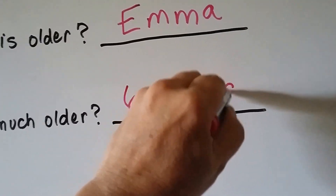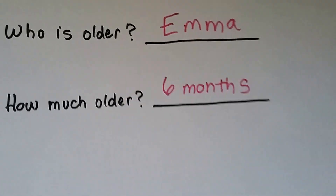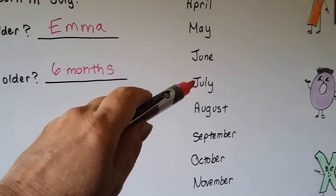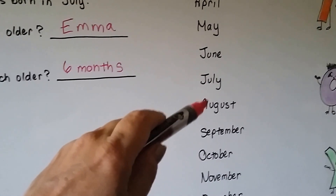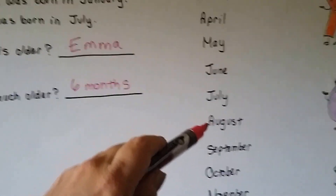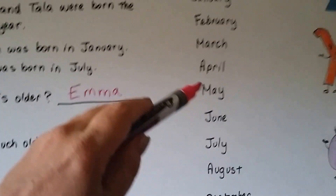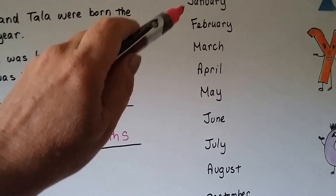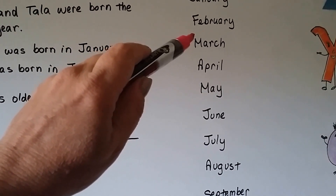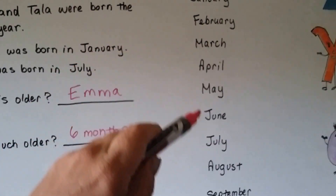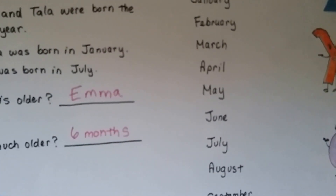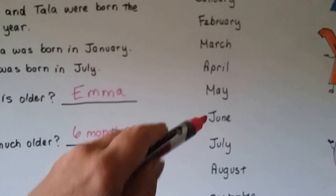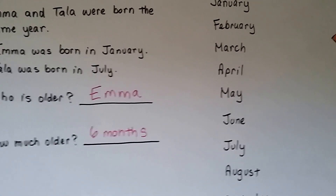They could be the same age. When it's after July, like in August, they'll both be the same age. But back here, Emma could be nine and Tala could still be eight — Tala won't be nine until July. So they could be a different age in the beginning of the year until Tala has her birthday.